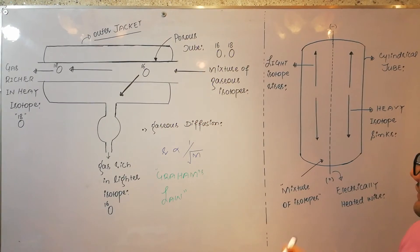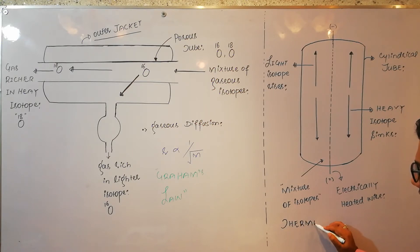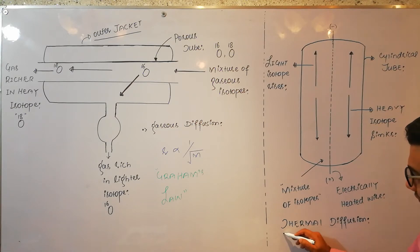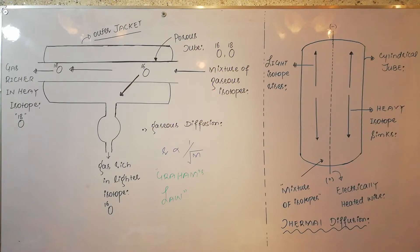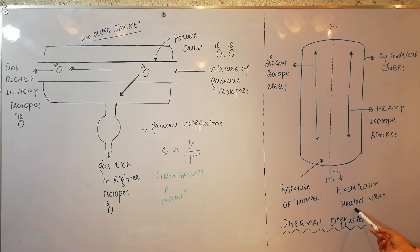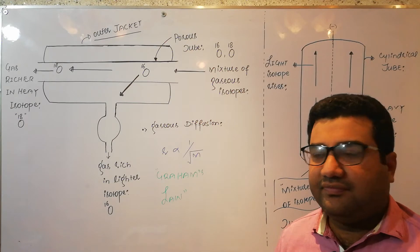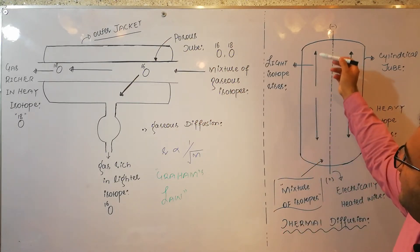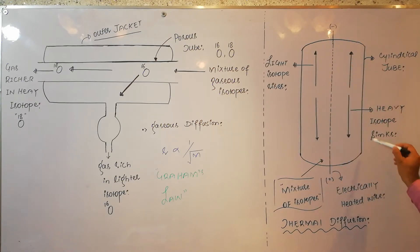The second method we are going to discuss is thermal diffusion. The apparatus used in this thermal diffusion method is in front of you. There is a cylindrical tube in which, at its axis, there is an electrically heated wire. We take the mixture of isotopes, and due to convection currents the isotope which is lighter will have an upward movement while the isotope which is heavier will sink down.